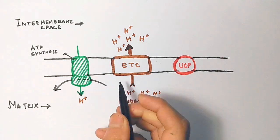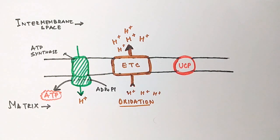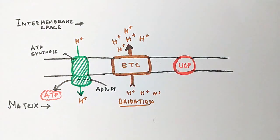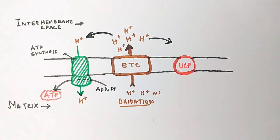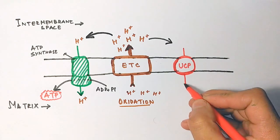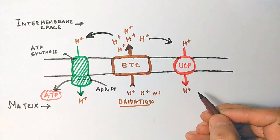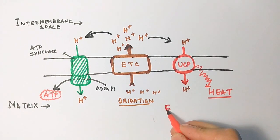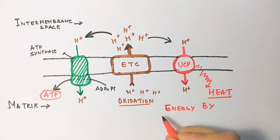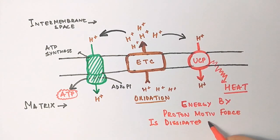If protons go through ATP synthase, there is production of ATP from ADP — this is driven by the proton motive force, a process called chemiosmosis. If instead the same protons go through UCP, the uncoupling protein, there is production of heat — the energy from the proton motive force is released as heat. This is why we call it uncoupling oxidative phosphorylation, also referred to as a proton leak, because protons leak into the matrix rather than going through ATP synthase.